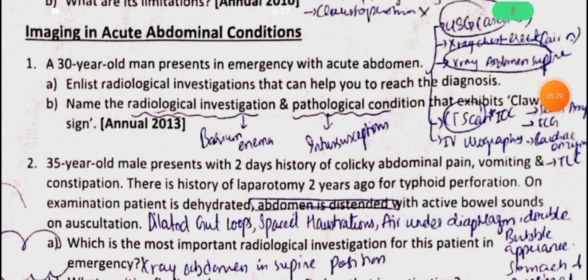To summarize imaging in acute abdominal conditions: for a 30-year-old man presenting as an emergency with acute abdomen, we perform ultrasound, chest X-ray, abdominal X-ray, CT scan as the investigation of choice, along with serum amylase, ECG, cardiac enzymes, TLC, and focus CT scan.